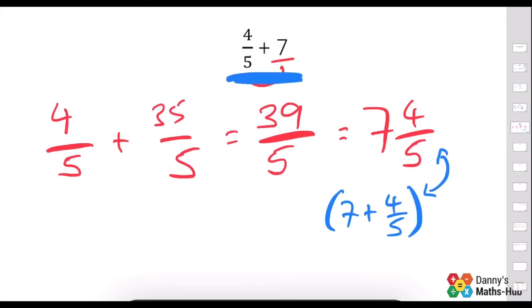If we're actually adding a whole number to a fraction, it ends up just being that whole number with that fraction, because it's the way we represent it. 7 and 4 fifths.